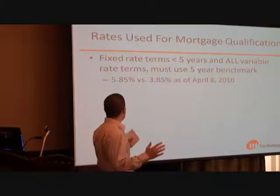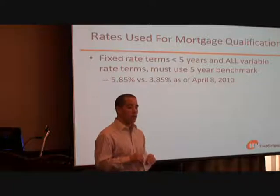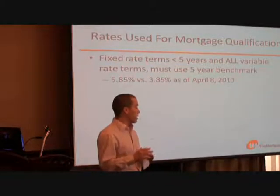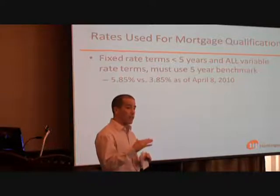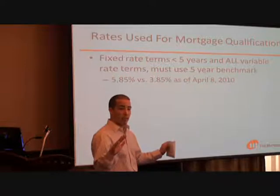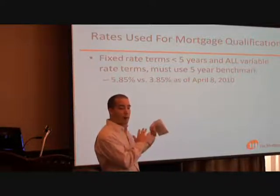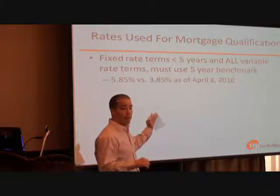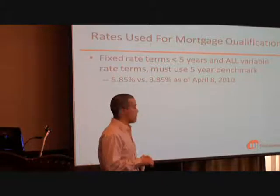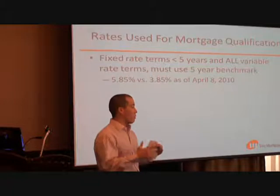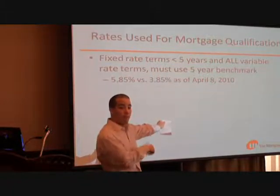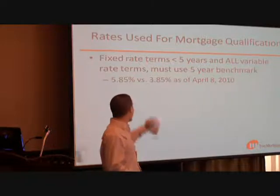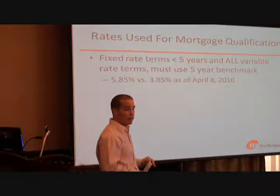This is a more significant change: the rate that is going to be used to determine how much people can qualify for. If someone is going to take a fixed rate mortgage of less than five years, or any variable rate mortgage, they have to qualify for the amount they want using the Government of Canada benchmark posted rate, which right now is 5.85%, versus the 3.85% that could be used before. So if they want to qualify for a $500,000 loan with a variable rate, they are going to have to qualify using that higher rate.